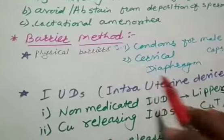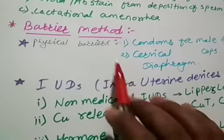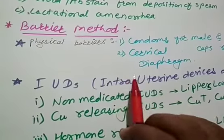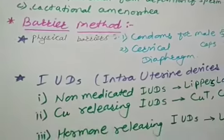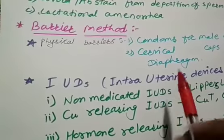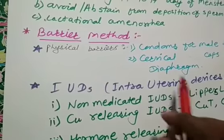In this video, we will see that second type of method, that is barrier method. The name itself shows that barrier means it is avoiding the things. So in this method, what happens that ovum and sperms are prevented by physical limiting, with the help of barriers.